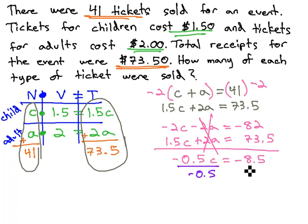Dividing both sides by negative 0.5, we end up with C, the number of children, being 17.